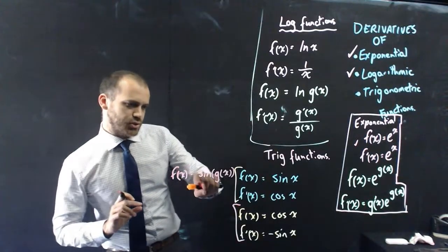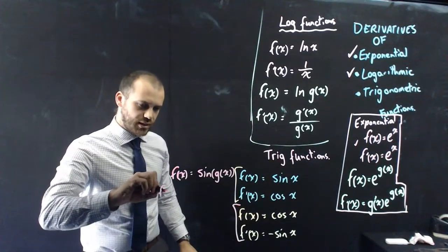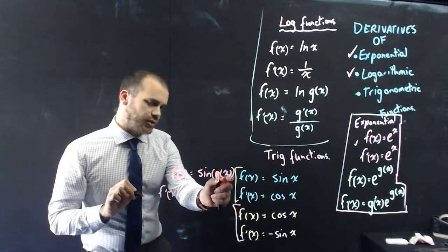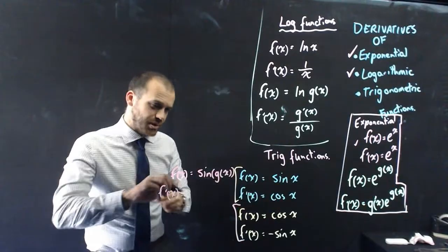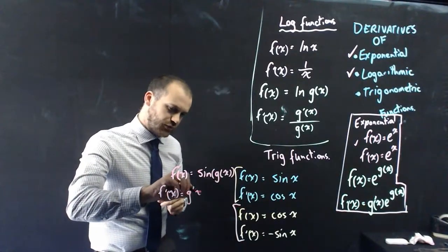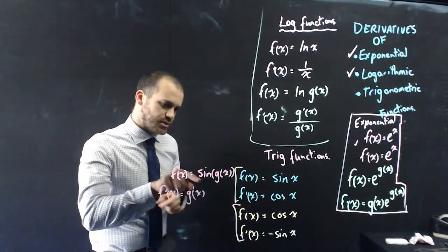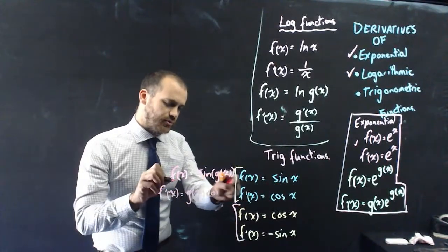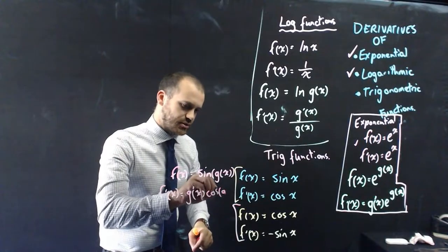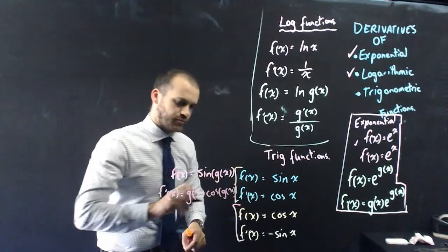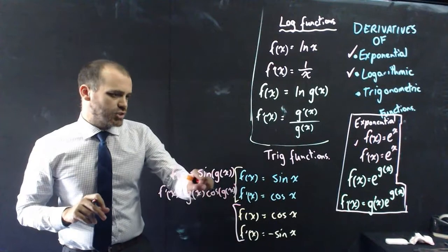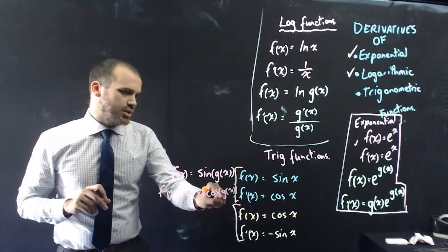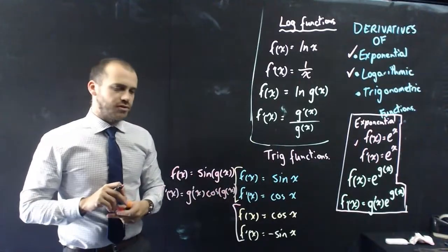Now we consider what happens if a function is inside. If f of x equals sin g of x, then f dash of x equals g dash of x - the derivative of the inside function - times cos of g of x. So sin becomes cos, and the function inside stays as g of x.